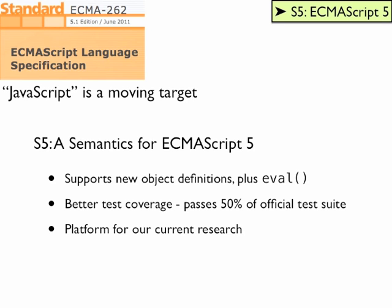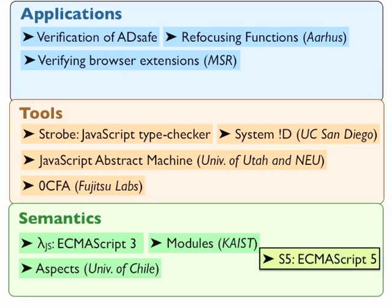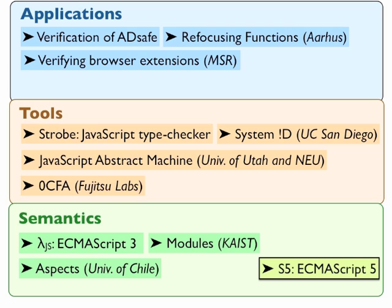This involves supporting the new styles of objects that they're introducing, which have getters and setters, for example. As well as addressing some things that we didn't get to in original LambdaJS, like eval. There's an official conformance suite that comes with ECMAScript version 5 that's getting more robust every day. And we pass a little over half of it right now. So we intend for S5 to be the platform for our current and future research on JavaScript.